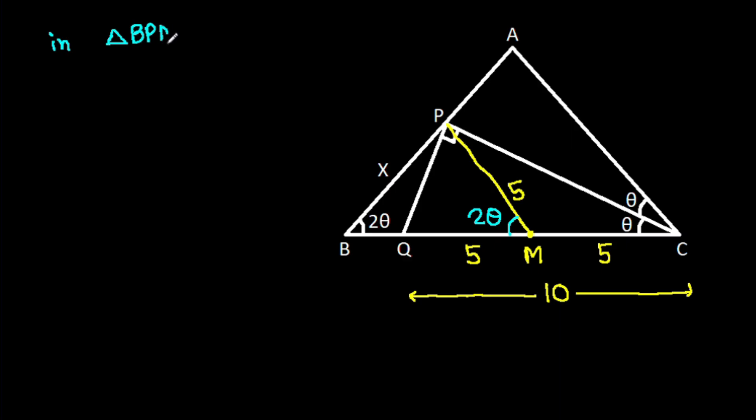In triangle BPM, these two angles are equal, that is 2 theta, that means BP will be equal to PM, and BP is X, PM is 5, so X will be 5.